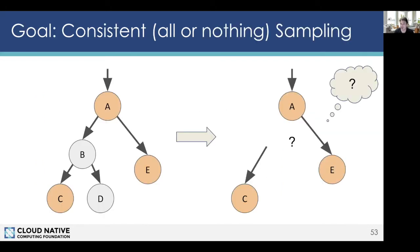In distributed tracing specifically, sampling has an interesting aspect: we need so-called consistent sampling. If we collect spans for a trace, we should either collect all of them across the whole architecture for that request, or none of them. The alternative — randomly making sampling decisions mid-request — produces a broken trace where some nodes appear without a parent, making it hard to reason about. Consistent sampling means we get the whole trace every time, or not at all, which is also acceptable.